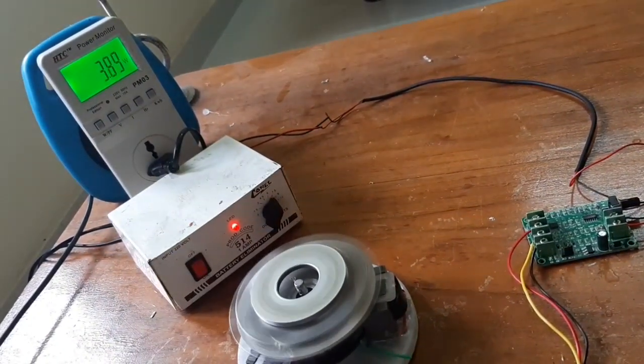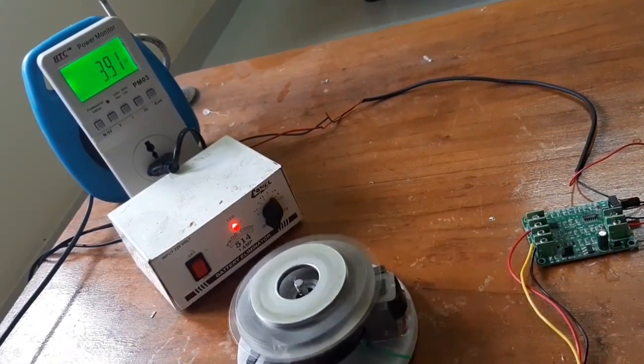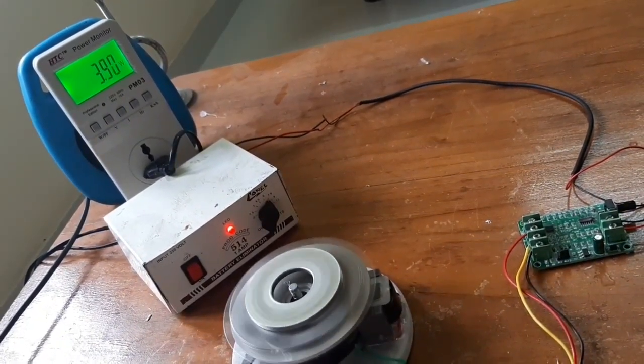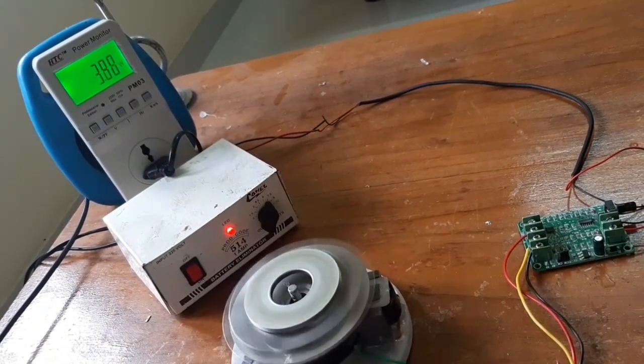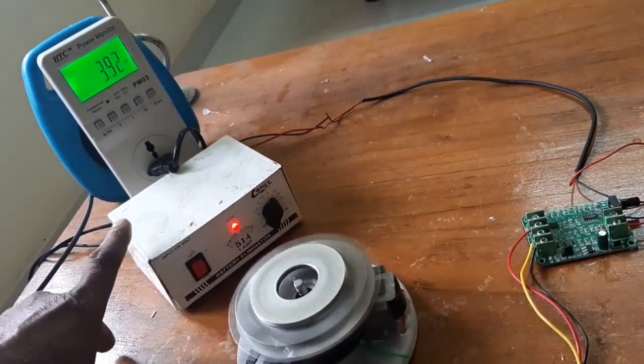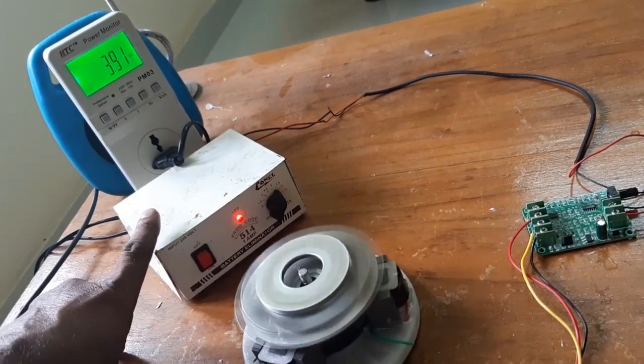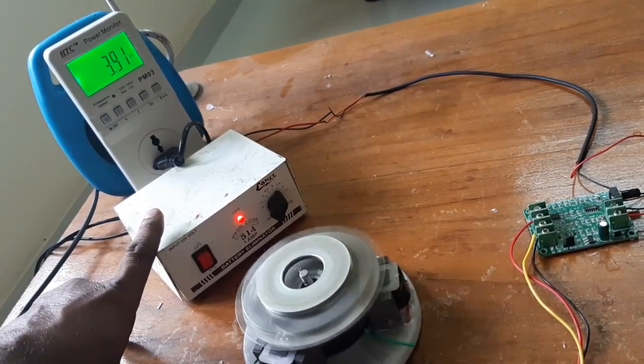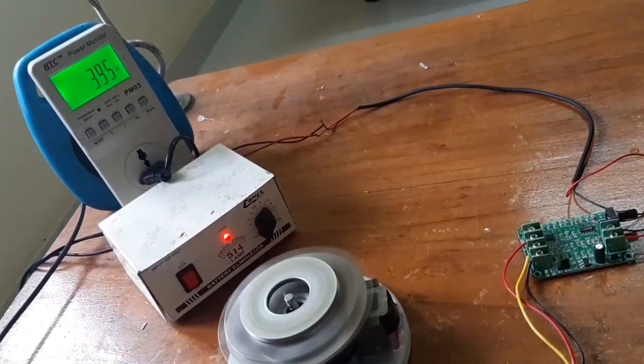Here, our power consumption is 3.9 watts, but this is not actual motor power. The eliminator in ideal condition consumes 2 watts, so the remaining 1.9 watts is consumed by the motor.